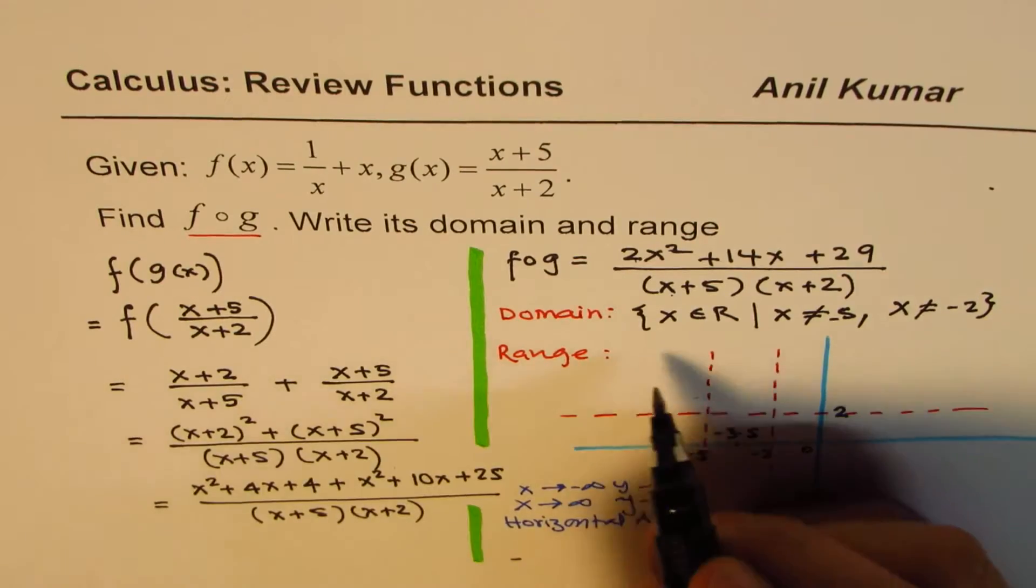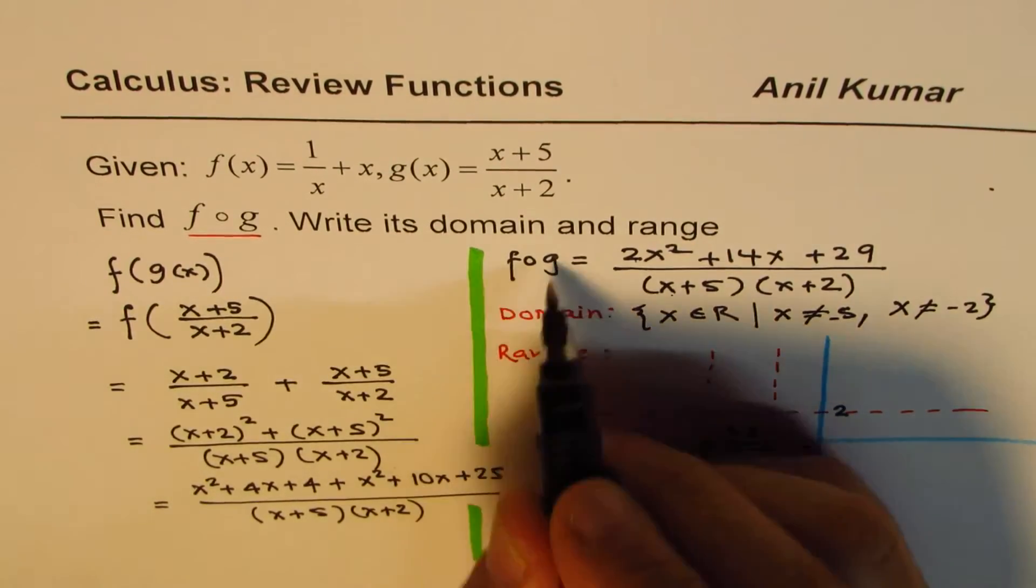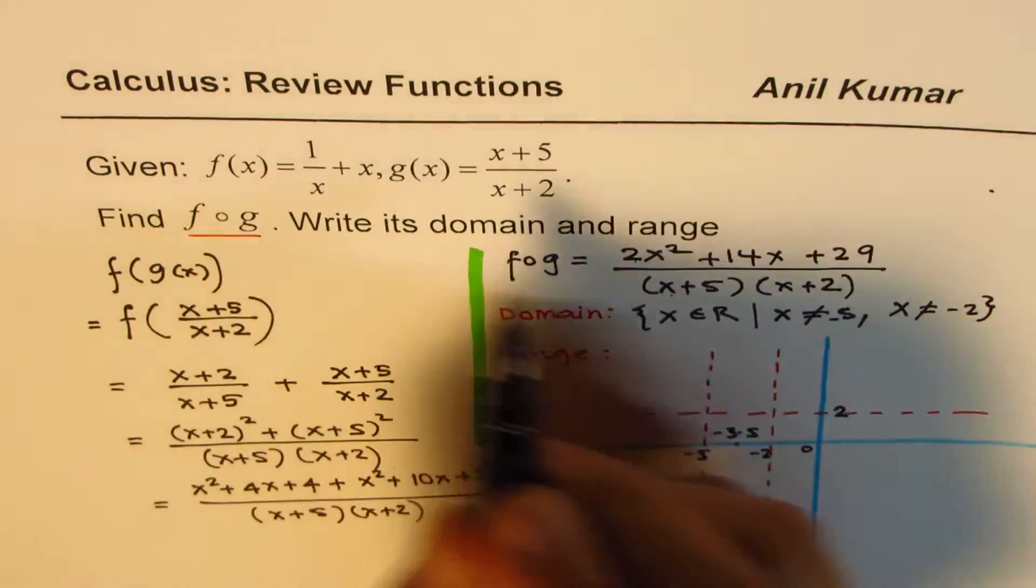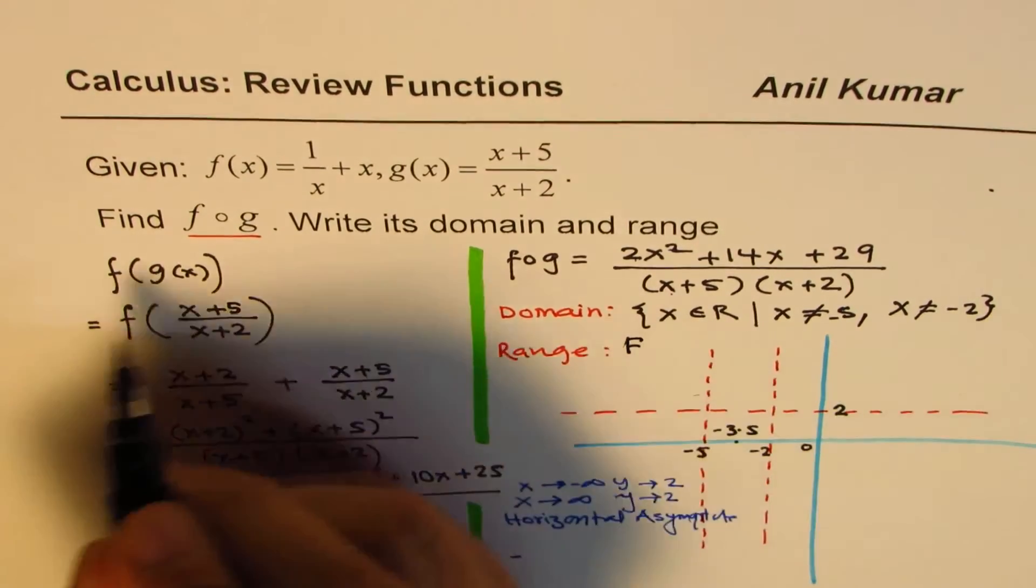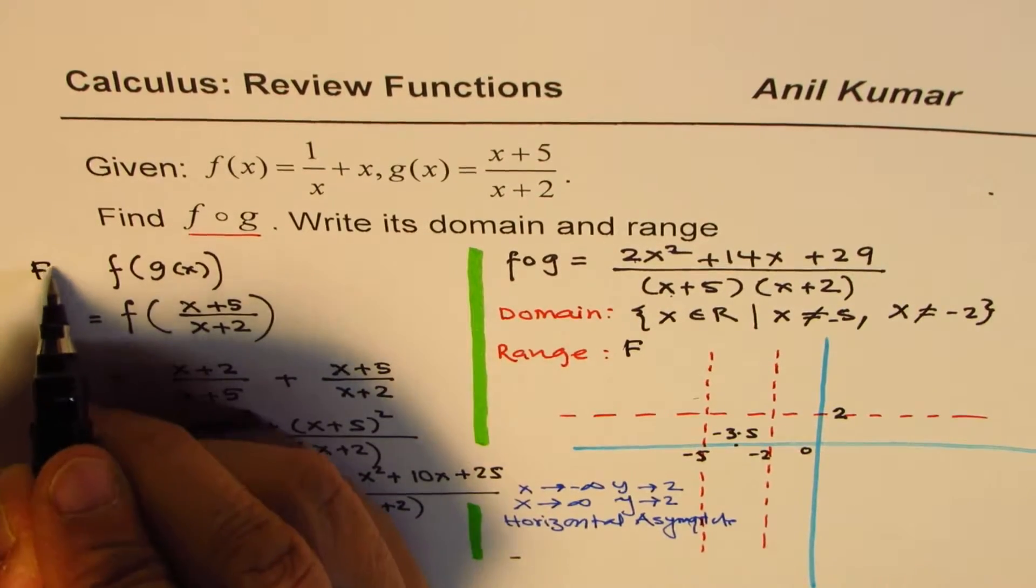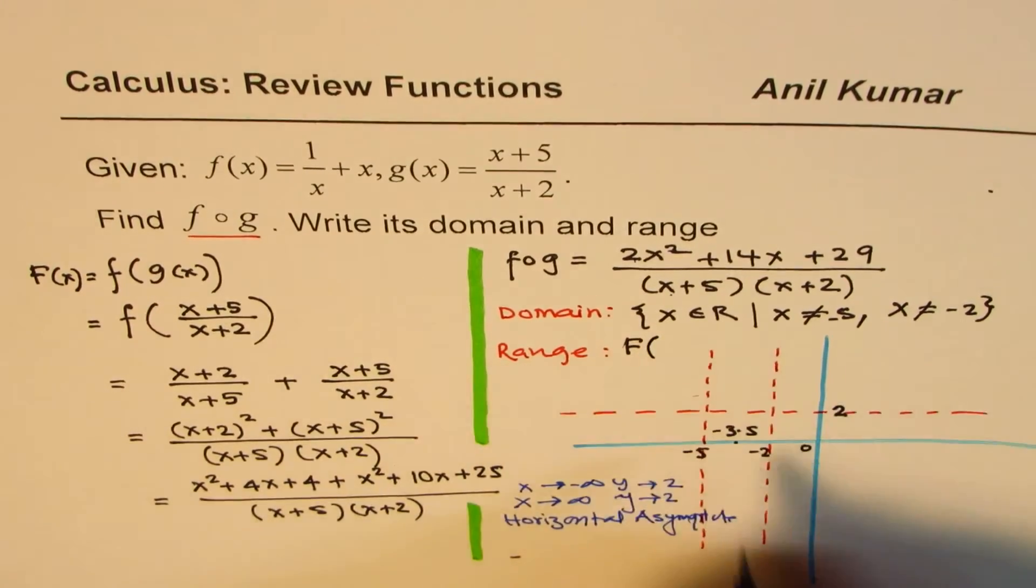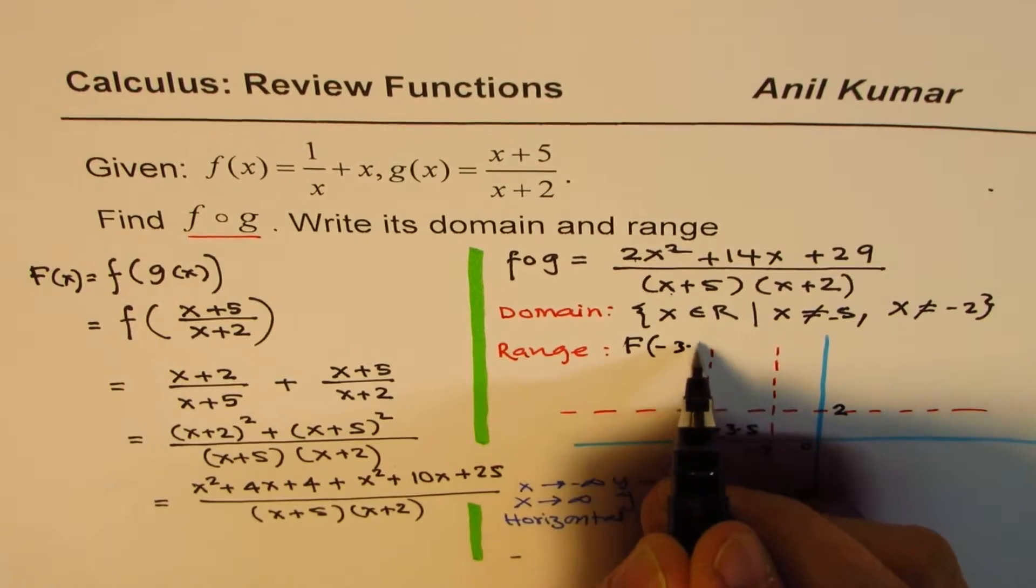So minus 3.5 is local minimum in this case. So what we can do is, we'll find the value of this function, let me call this as capital F, let me call this function as capital Fx.